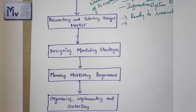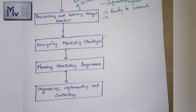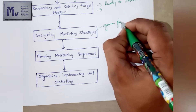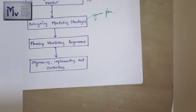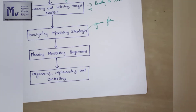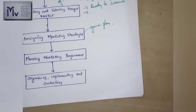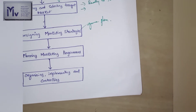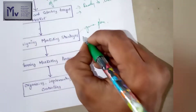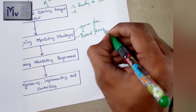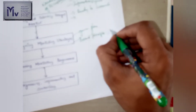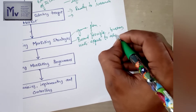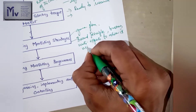The next step is designing marketing strategies. The marketing strategy spells out the game plan for attaining the business objectives. Marketing strategy may be defined as the broad principle by which the business unit expects to achieve its marketing objectives.